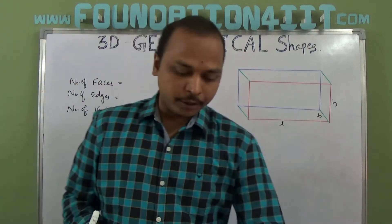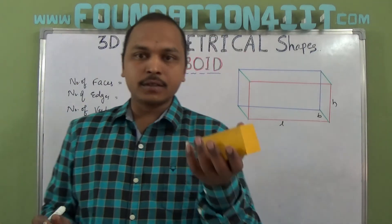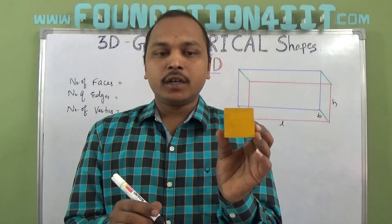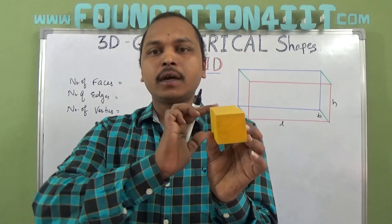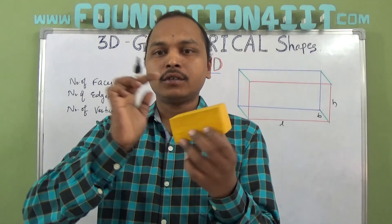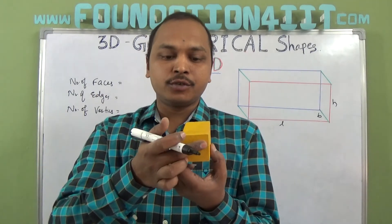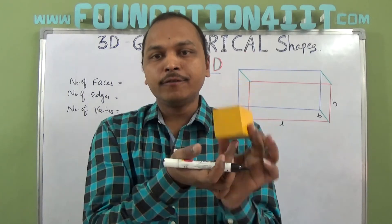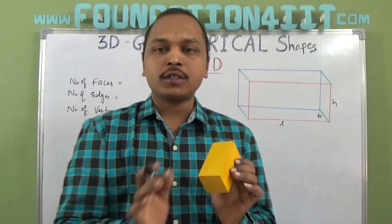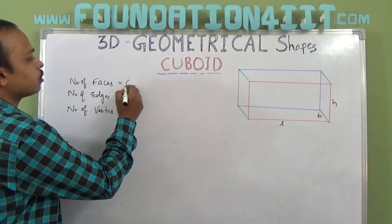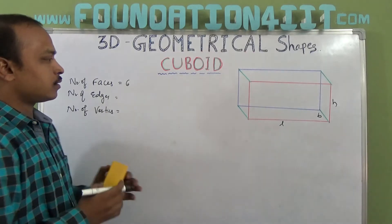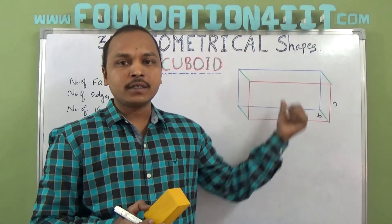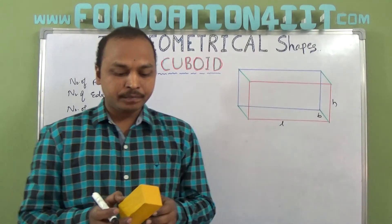Number of faces: we have the front face and the back face — that is two — plus four side faces, one, two, three, and four. So the total is six faces. There are six faces in a cuboid.